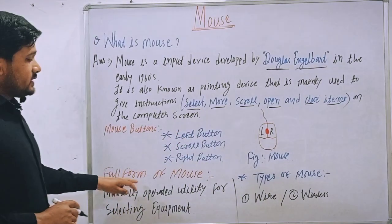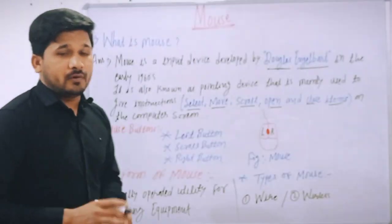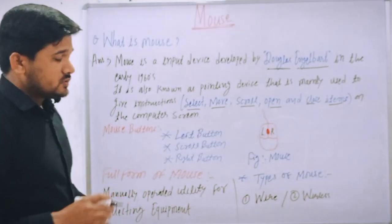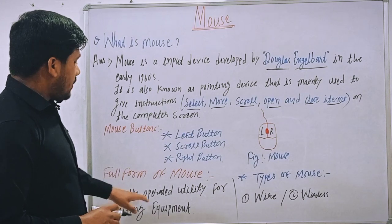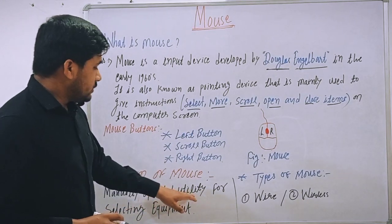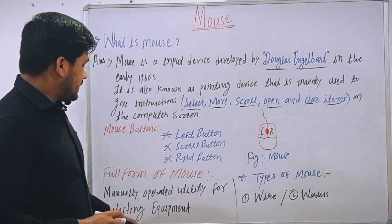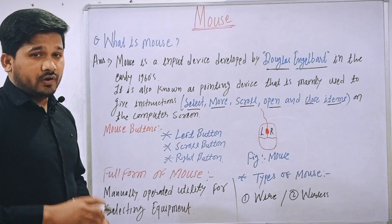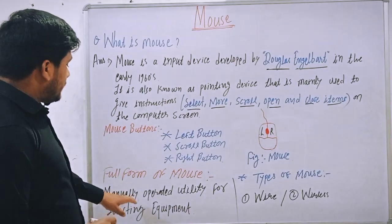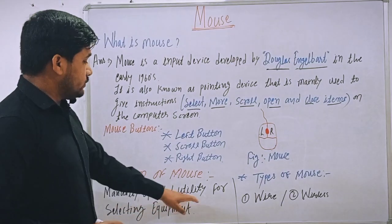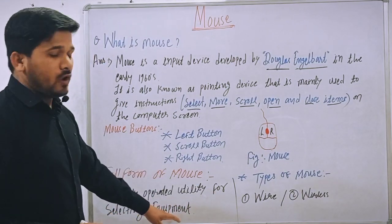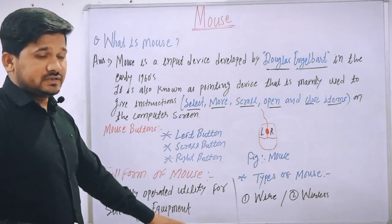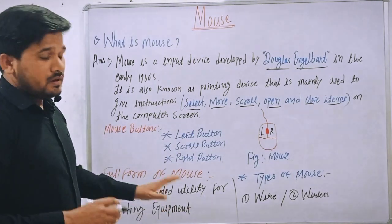So now, what is the full form of mouse? The full form of mouse is: Manually Operated Utility for Selecting Equipment. That is the full form of mouse.